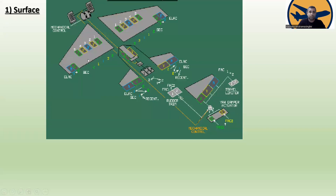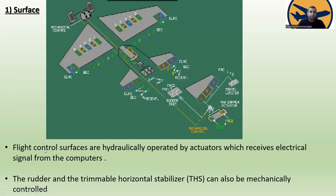The flight control surfaces are hydraulically operated. The flight controls are hydraulically operated by actuators which receive electrical signals from the computer. The rudder and the trimmable horizontal stabilizer can also be mechanically controlled.